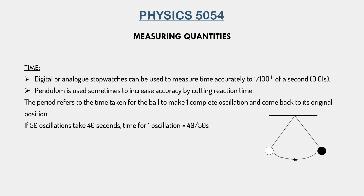Next we will talk about how we can accurately measure physical quantities. The first physical quantity is time. It is crucial that we are able to correctly measure time, not only because accuracy is very important in experiments but also because time is often used in calculating other quantities such as speed. There are two possible ways to measure time. The first is to use a stopwatch. Stopwatches are digital or analog depending on your display, with digital stopwatches usually being more accurate.